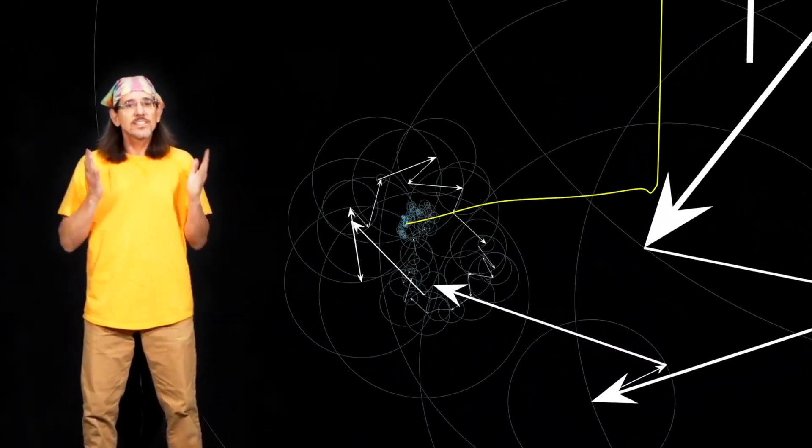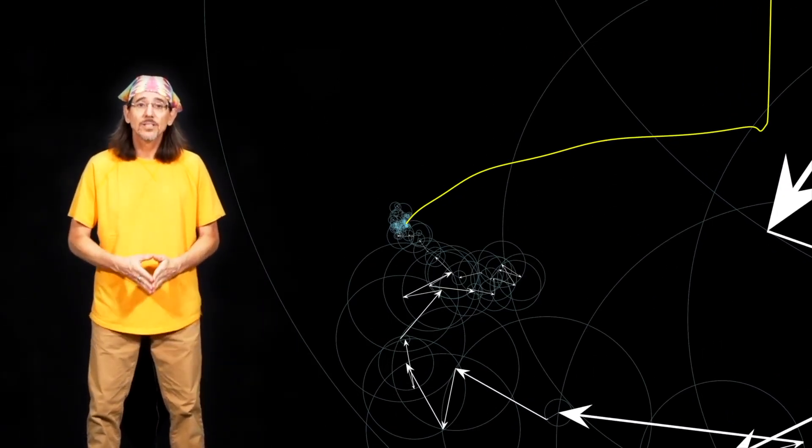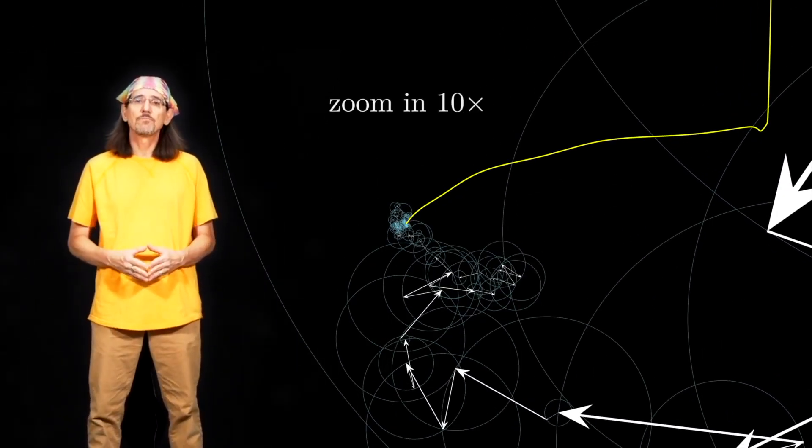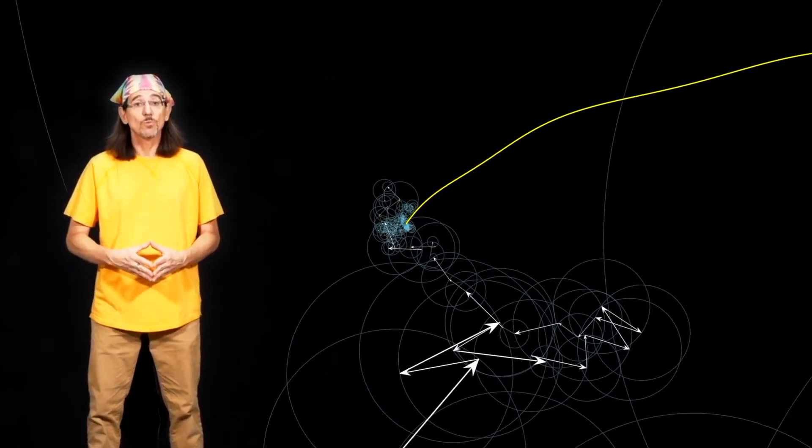Unfortunately, we still can't make out what's happening with the smallest arrows, so let's zoom in a little more. And while we're at it, we'll slow things down a little as well.